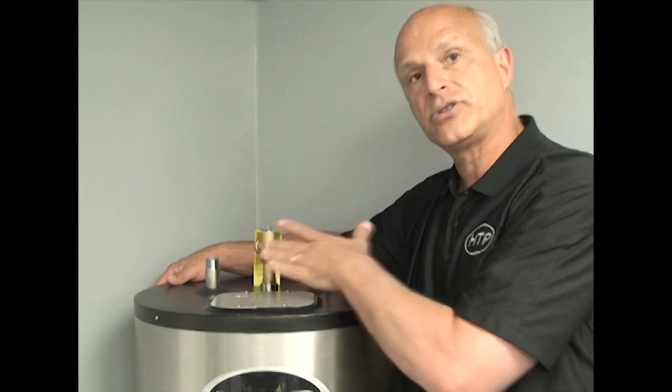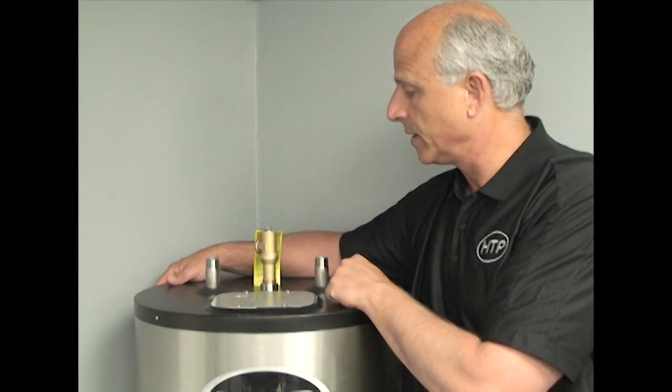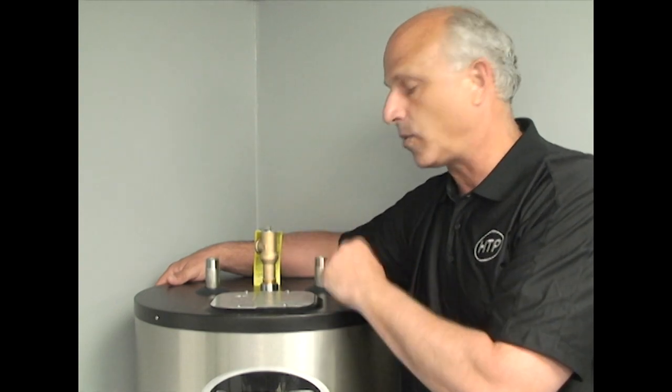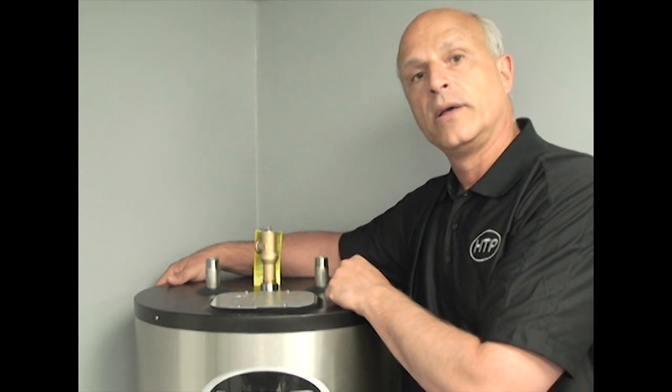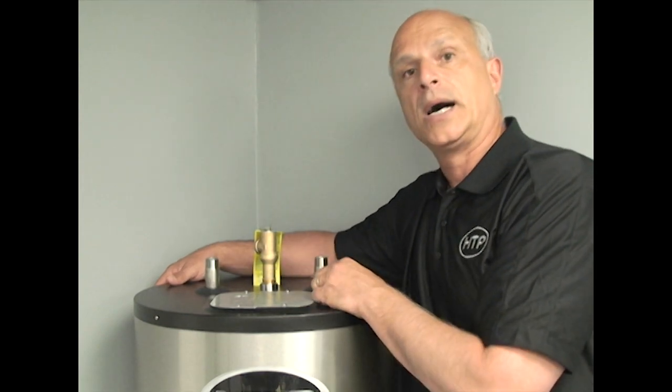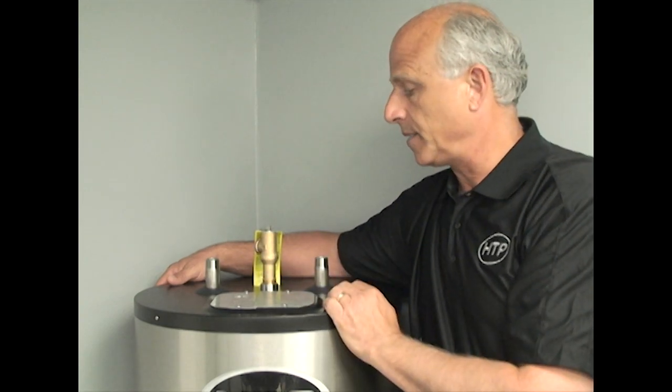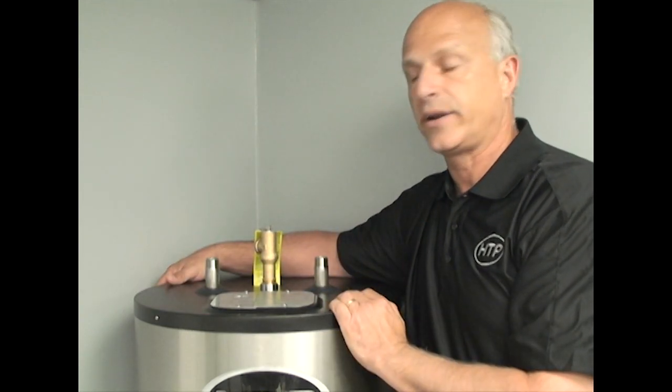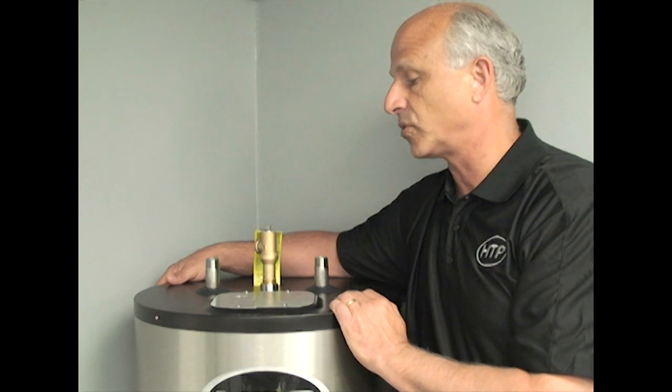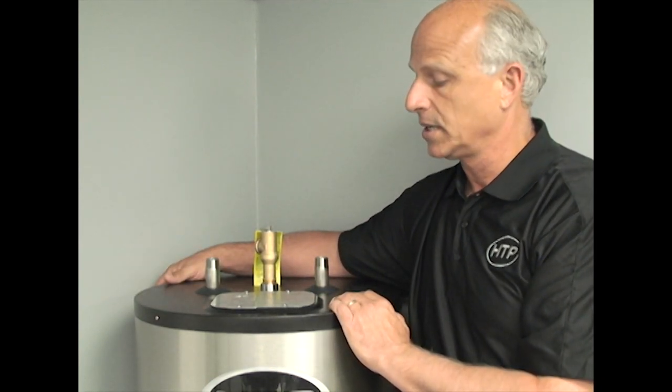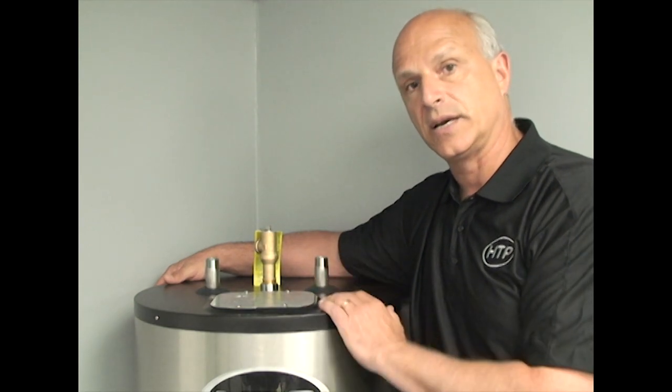We have all our plumbing connections coming out of the top as you can see here. You have your domestic hot water connections, you have your hot water outlet and your cold inlet. Those have heat traps in them, a little flapper that's in there to basically retain the energy inside the tank. And since you can go up to 180 degrees you'll have that energy stored from top to bottom, and it'll give you very, very long draws utilizing the entire capacity of the tank.